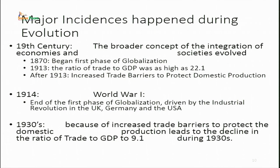In the 1930s, because of increased trade barriers — tariffs, quotas, and sanctions — it became difficult for foreign investors to invest in foreign markets. Instead of helping domestic companies grow and develop their production, governments created a protective environment and tough barriers for international business. As a result, GDP went down to 9.9%, which was very devastating.